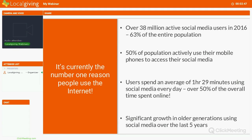Social media is currently the number one reason that people use the internet. Some interesting stats: over 38 million active social media users in 2016 — that's over 63% of the entire population, and I would imagine that figure is rising. People actively use mobile phones and mobile devices to access social media on the go — on their commute to work in the morning, on their lunch break or sitting at home. The average user spends around 1 hour and 29 minutes on social media every single day, which is actually over half the time people spend online.